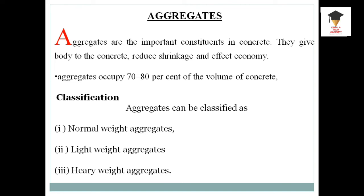The most volume of concrete is occupied by aggregates. We usually say that when the aggregate is passed through a 4.75 mm sieve, those which pass through the 4.75 mm sieve are called fine aggregates, and those which retain on this sieve are called coarse aggregates.